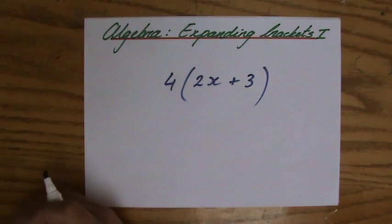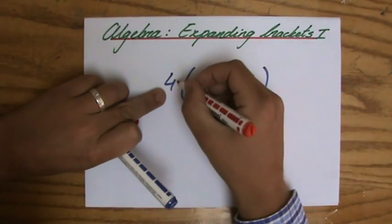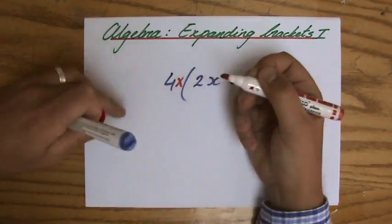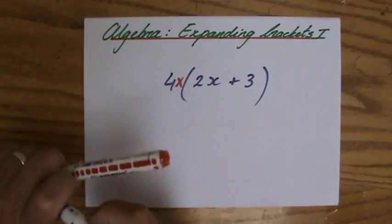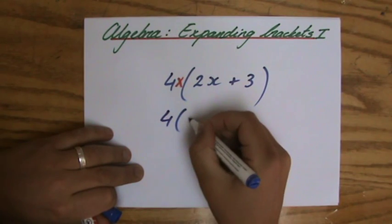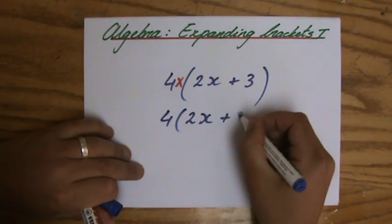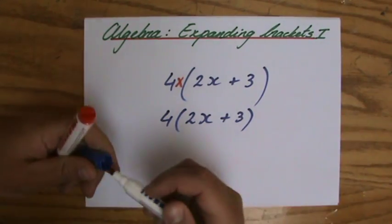And then we have to expand it. Now what does that mean? This basically means between the 4 and the brackets, there is a times sign. But as mathematicians, we are quite lazy. So if we can avoid writing down the times sign, we will. So we just do 4 bracket, 2x plus 3 bracket. But it does mean times.